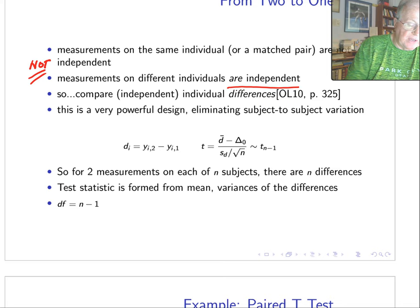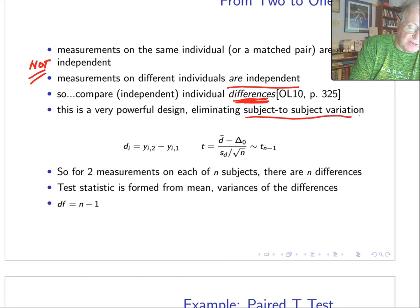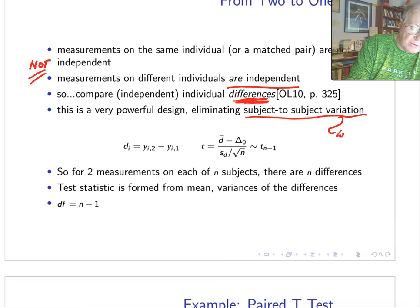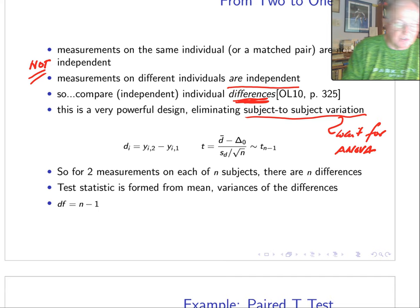So we get around that by comparing the individual differences. That is, we look at the difference between the two measurements subject by subject. Turns out this is a very powerful design since it eliminates subject-to-subject variation. Okay, and again, wait for ANOVA—we're going to see exactly how this works a little bit later in this series of lectures.